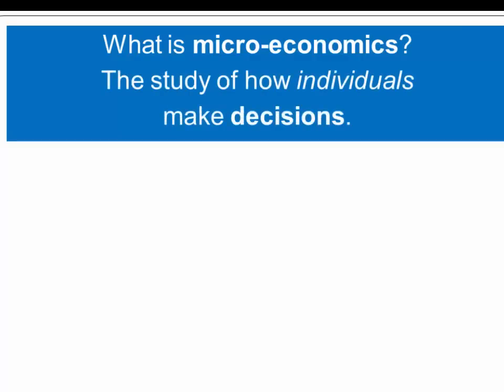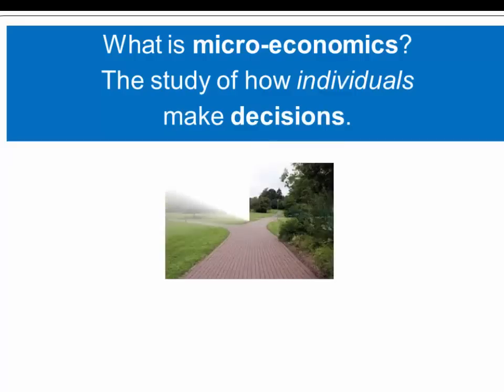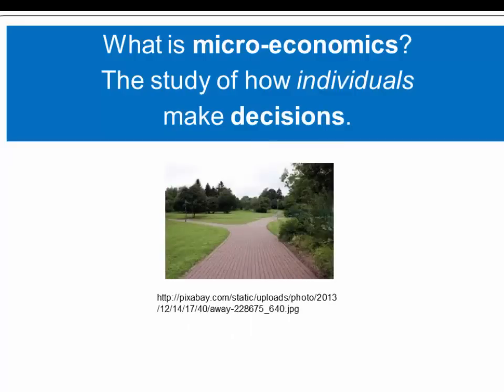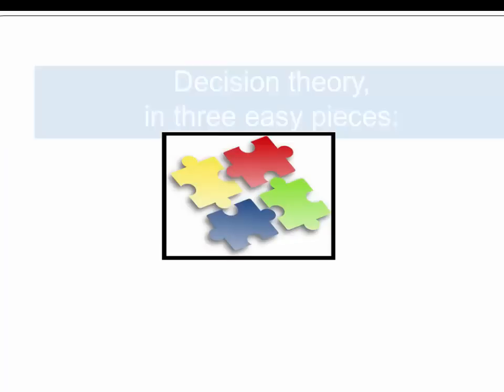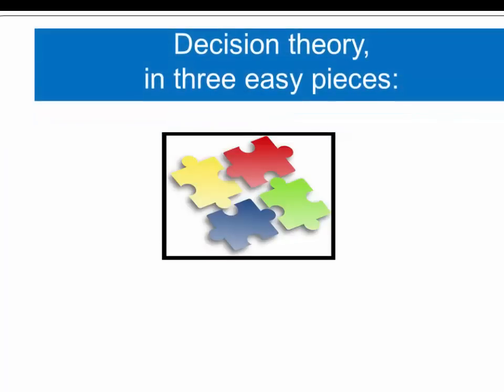So this brings us then to the area of economics that's most closely connected to evolutionary theory, and this is microeconomics, which studies how individuals make decisions. So when we reach that fork in the road, how do we decide which way to go? And microeconomics is about situations where we can reason and arrive at a rational decision about which way to go. So there's three easy pieces to what's called decision theory, which is the most influential outcome of microeconomics.